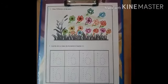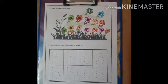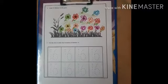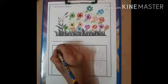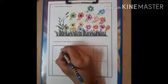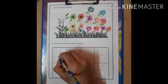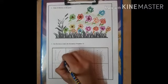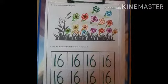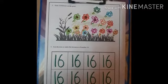Let's do question 3. Join the dots to make the formation of number 16. For this, you have to draw a standing line, front open curve, and then make a circle like this. Similarly, you can trace all the numbers like this.